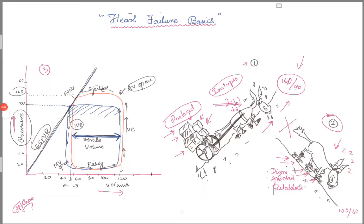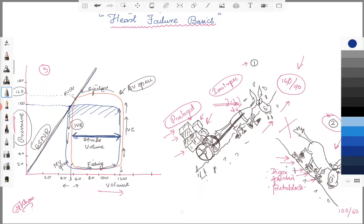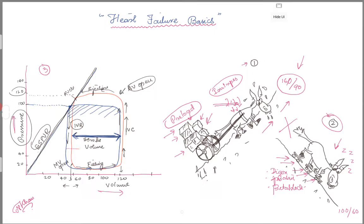What I want you to focus on is what happens to stroke volume when you lower blood pressure in a normal person. I'll draw it in orange. The stroke volume goes up — but notice how much it goes up. This shaded area is only the modest amount of stroke volume benefit you get when you lower blood pressure from 120 to 100 in a patient with a normal heart.